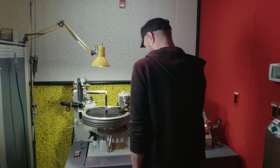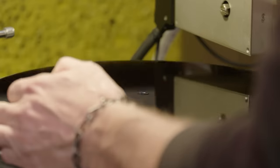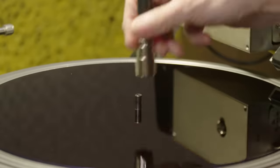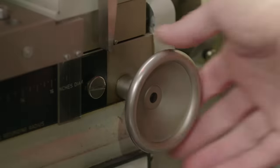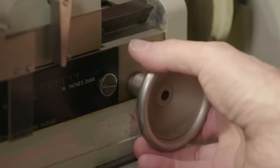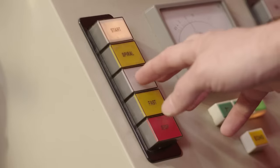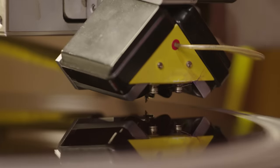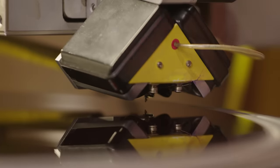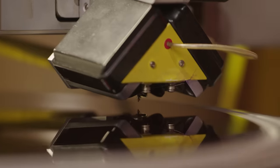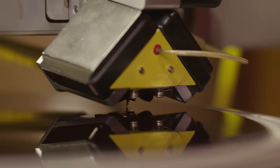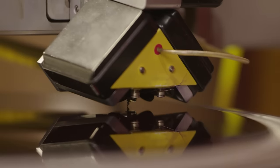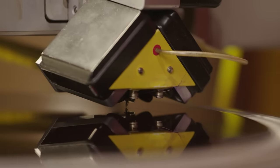First, the lacquer cut. Most records you've heard have been done on lacquer. There is one company in the world that makes the lacquers that we use. It's called MDC. They're in Japan. It's basically the same as nail polish, but it hasn't fully hardened yet.